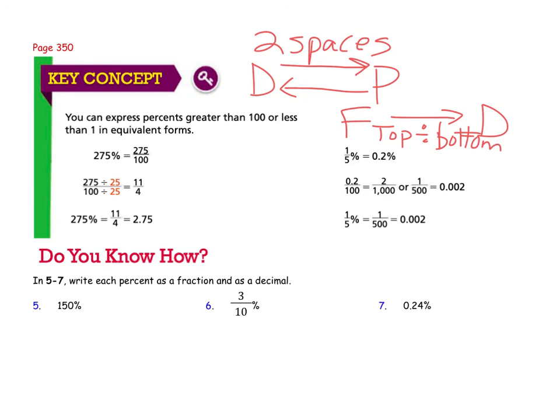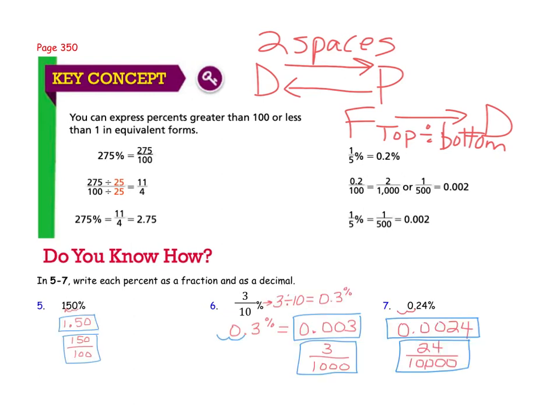What I'd like you to do is to pause the video and see if you can try numbers five through seven on the do you know how. Then restart to check your work. Remember, percent to decimal is two spaces left. On number six, first you need to change your fraction percent into a decimal percent by dividing three by ten. Then use your place values to turn your decimals into fractions.